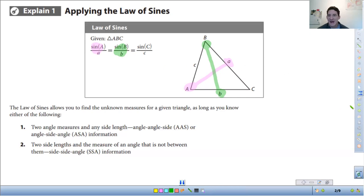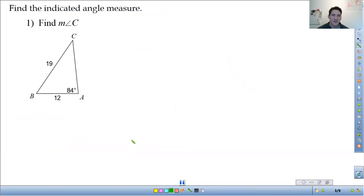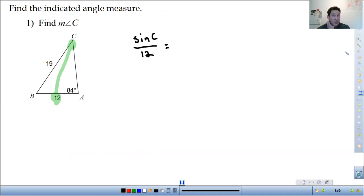So let's look at an example. Find the measure of angle C. So we're trying to find this angle in here. That's the unknown angle. And we have this side length across from it. So I'm going to set up that ratio. So sine of C over 12. That's the first one. Then we set up the other part that we know. We have this angle A is 84 degrees and the side across from it is 19. So we would do sine of 84 over 19. And now we can solve for C.